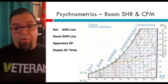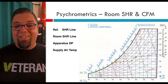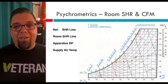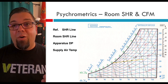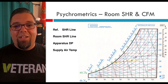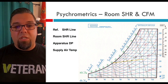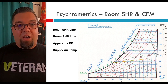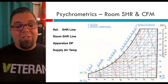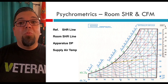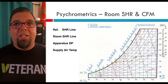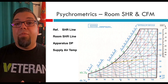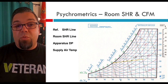We know our apparatus dew point, and we can pick any temperature on this line — believe it or not, any temperature on this line will cool the room. But the question is whether it will cool the room with the volume of air you have available. I picked two temperatures to show the difference: a supply temperature of 55 degrees and a supply temperature of 65 degrees. 55-degree air is going to cool the room a lot easier than 65-degree air, which may take forever or may never cool the room depending on the load.